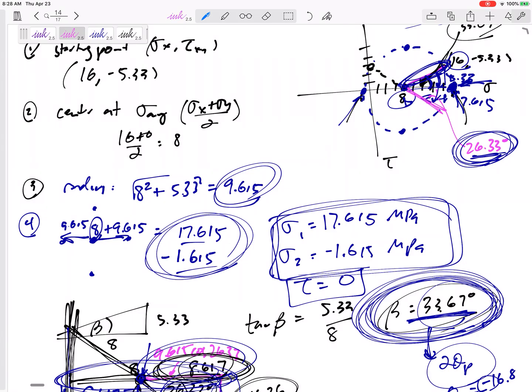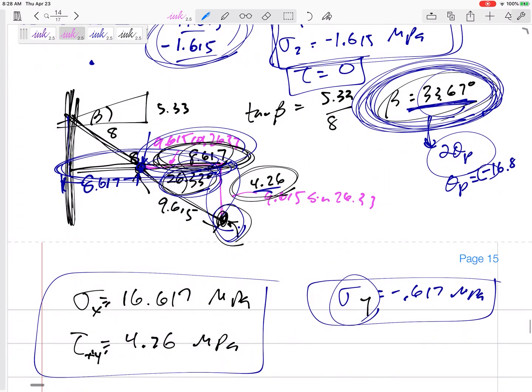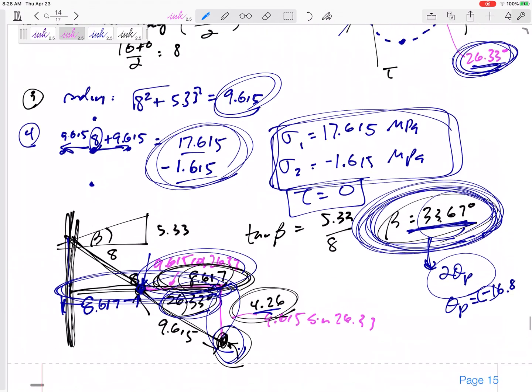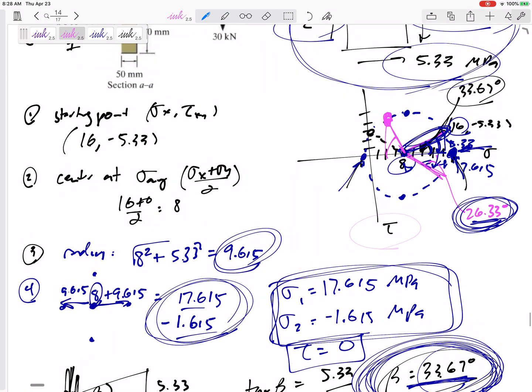And then you've got a new location, and you're trying to find that new point. You know the angle you're at, and you know the radius you're at. If you know the angle and radius, you can find the height and base. The height is going to be your tau. Remember, positive is down here on this side.